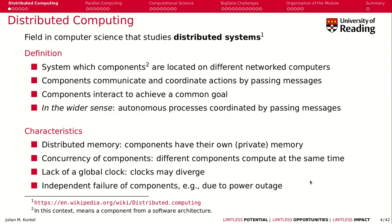Let me start with the first topic: distributed computing. Distributed computing is the field in computer science that studies distributed systems. We have to understand two parts of it — what does 'distributed' mean and what does 'system' mean? By system, we mean a computer system — anything related to computer science that works together to compute some kind of output.